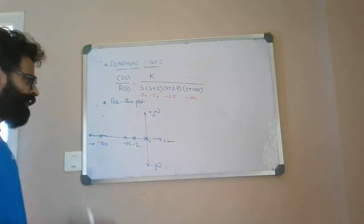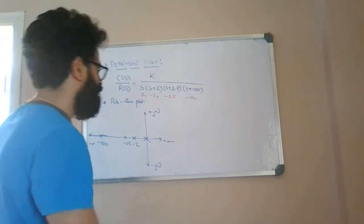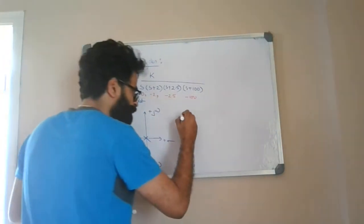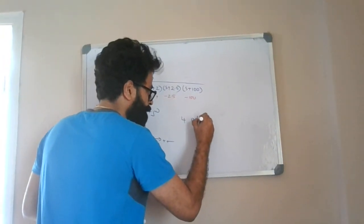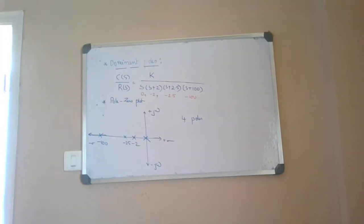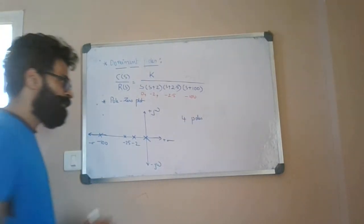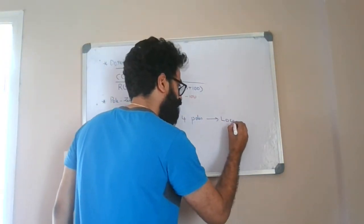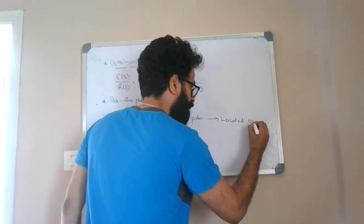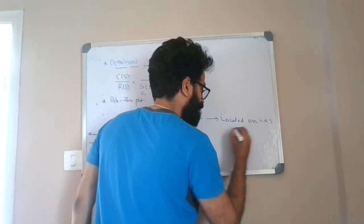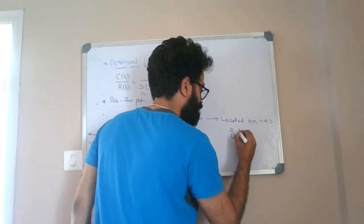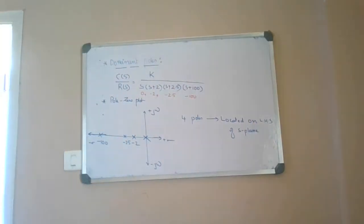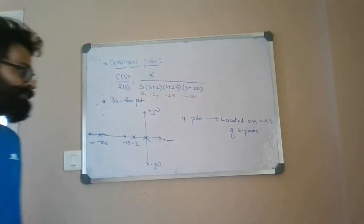Now, how many poles do we have? We have one, two, three, four poles — a total of four poles, and all four poles are located on the left-hand side of the s-plane, which means the system is stable.